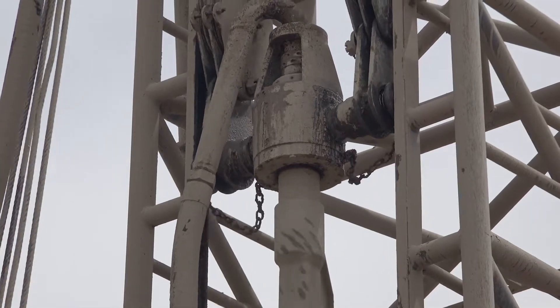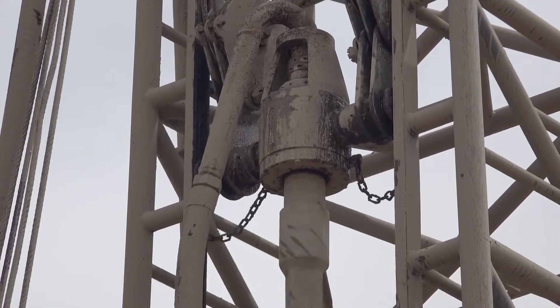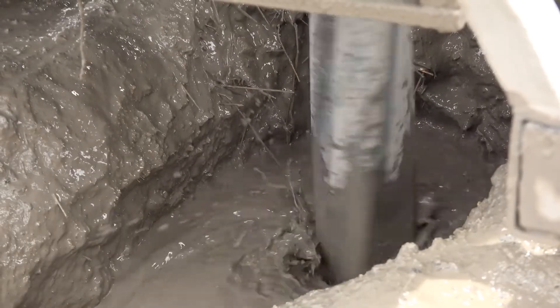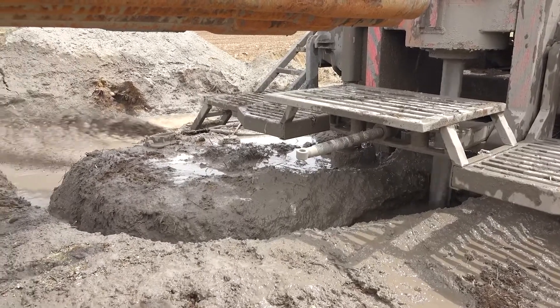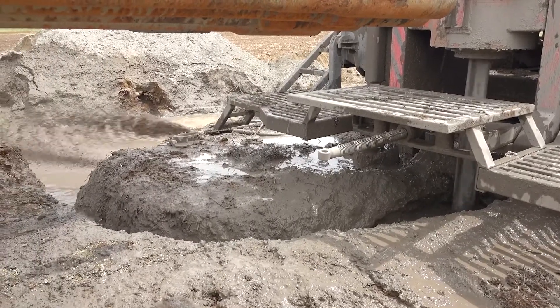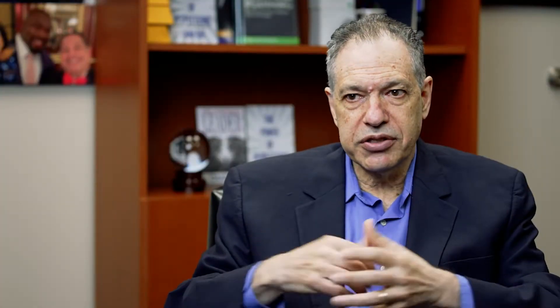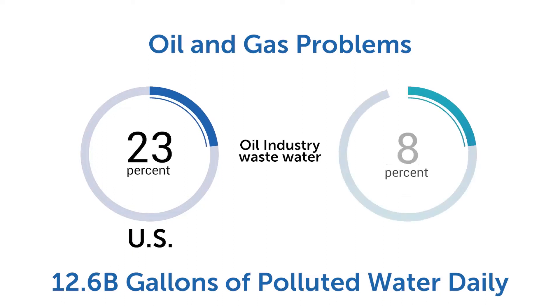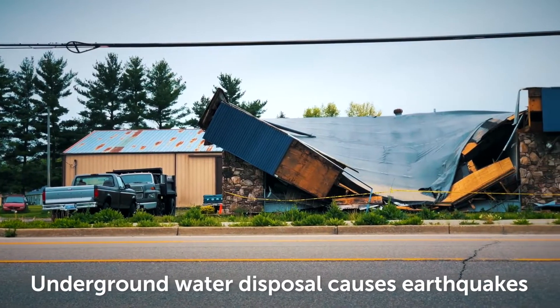Let's look at the oil and gas industry. For every gallon of oil that comes out of the ground in the U.S., roughly seven to eight gallons of contaminated water comes up. When you produce that much water you have to do something with it. The cheapest thing for them to do is dispose of it underground, and they've disposed of so much that it's causing earthquakes.